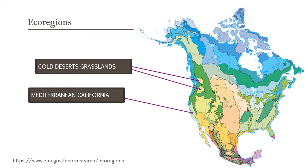If you look more specifically at the ecoregions map we use in class — remember, ecoregions include climate, soils, and plants, so they're a conglomeration of factors — the two ecoregions we'll be looking at are Mediterranean California, and the grassland part of the cold desert. We looked at the cold desert in the past, which was more shrublands. Now we're going to look at what the Intermountain Bunchgrass types are, and they're part of the cold desert also.